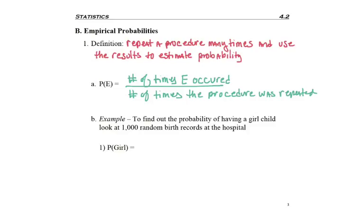If we really wanted to find the probability of having a girl, we could look at a thousand birth records. We would divide the number of girls that were born by the thousand records we looked at, and we now have created a probability where we didn't have a set known number of outcomes.